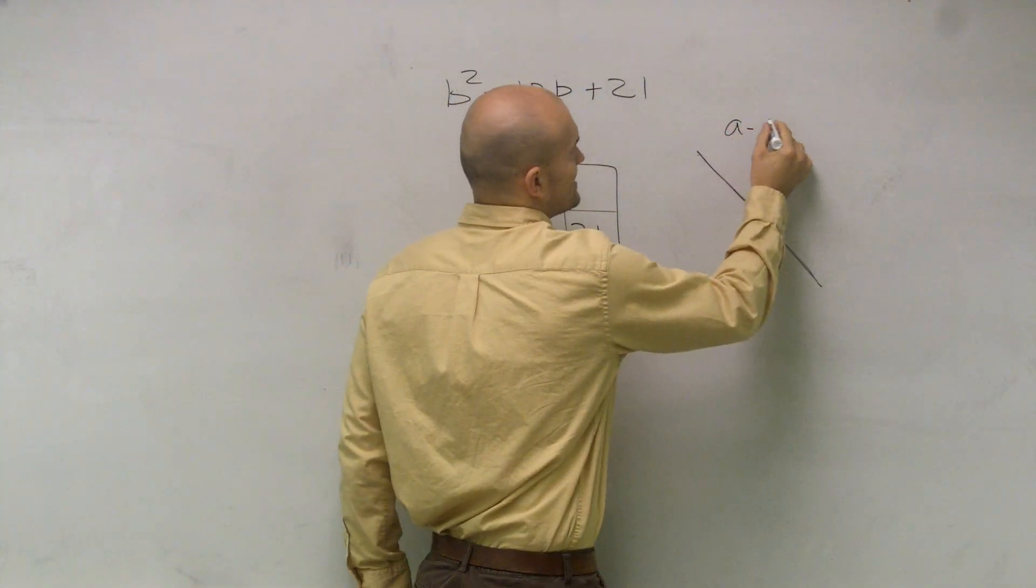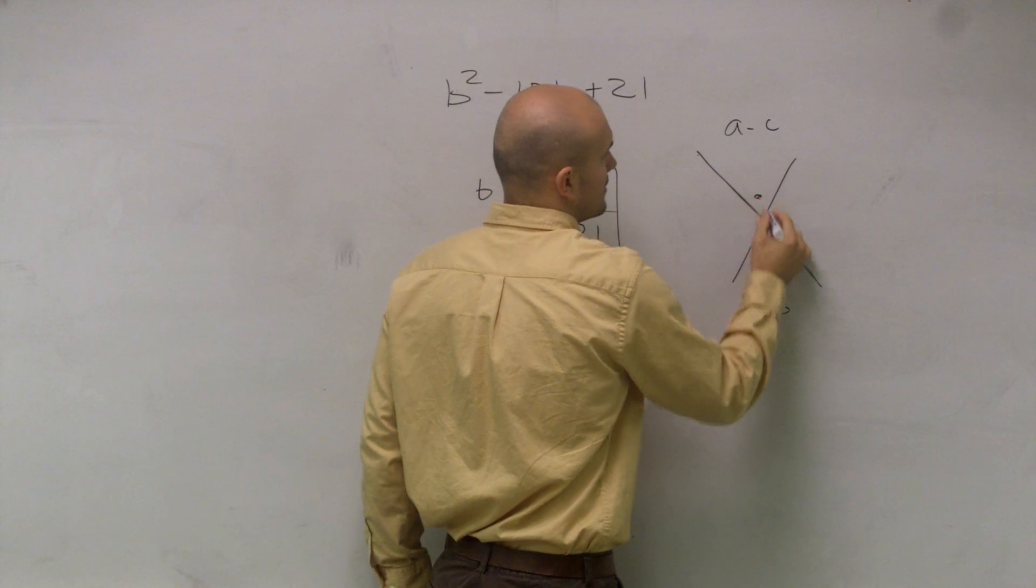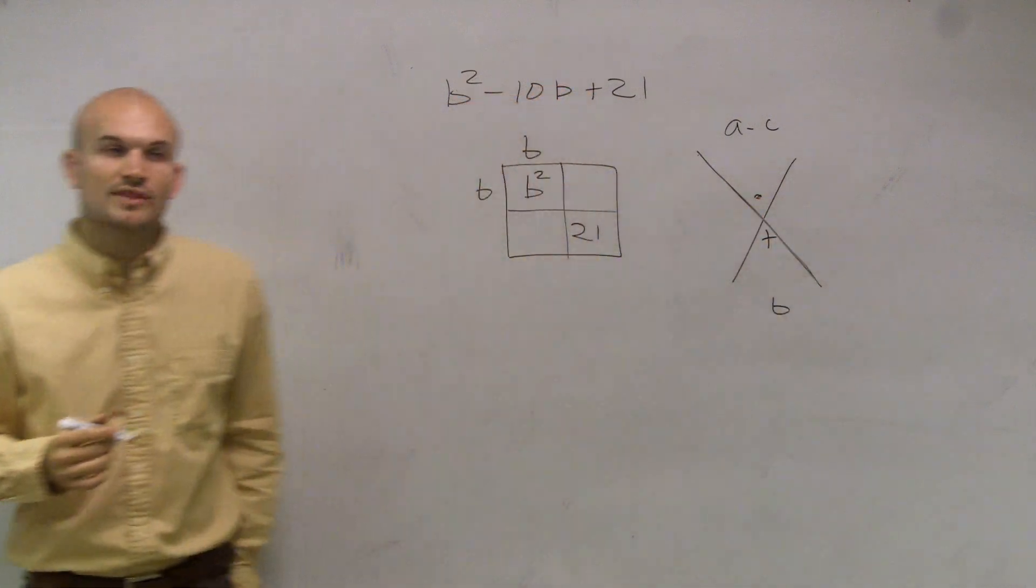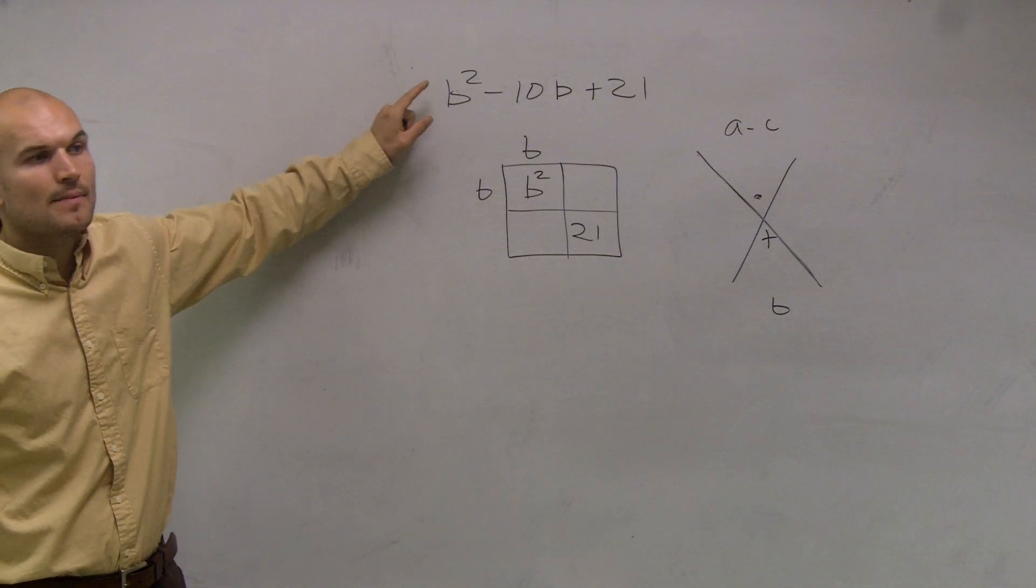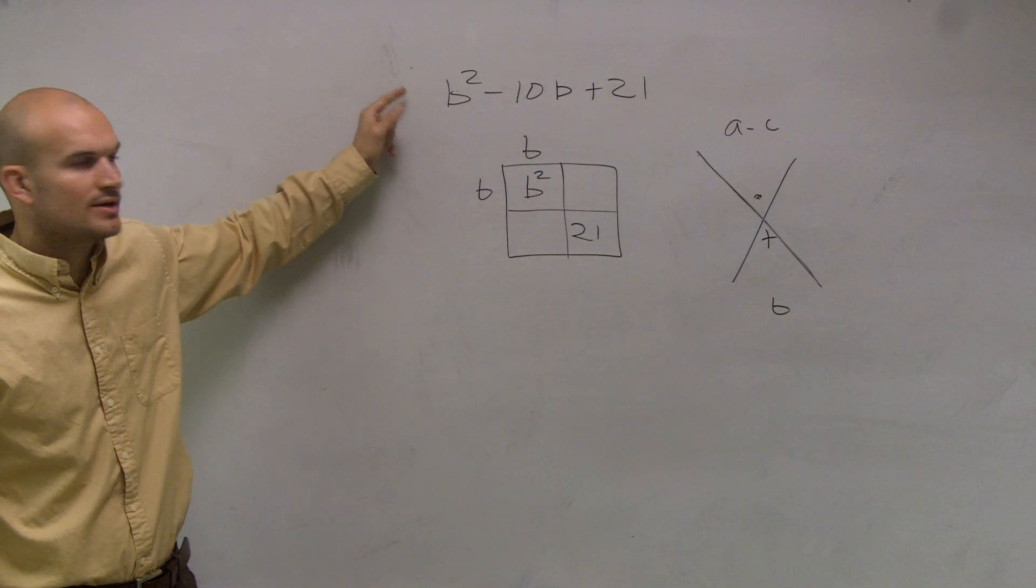If you guys remember, a times c over b, multiplying plus. Well, in this equation, your a is 1, because remember, a represents the number in front of your x squared.